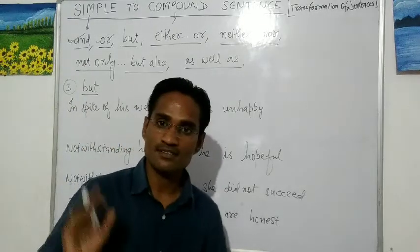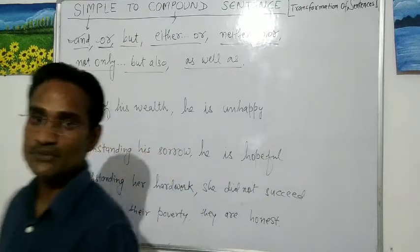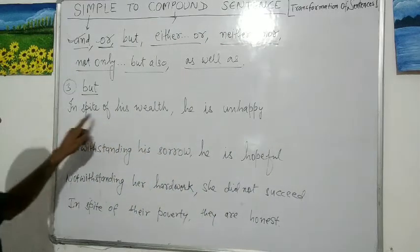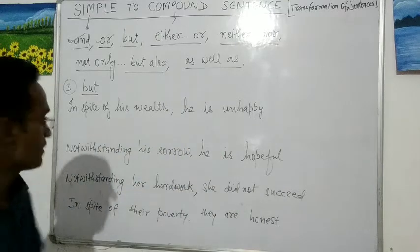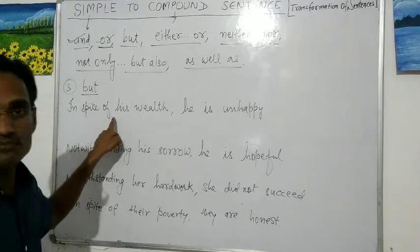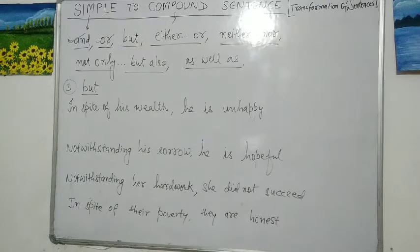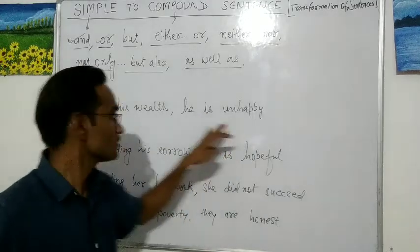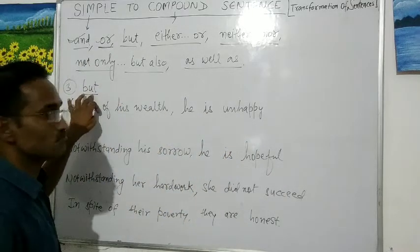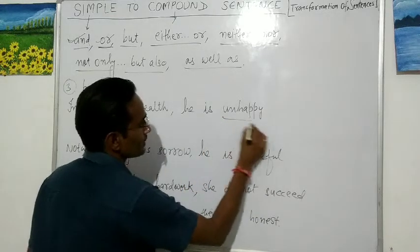Now let's move to the next conjunction, which is 'but' — the third one. How do we use 'but'? Example: 'In spite of his wealth, he is unhappy.' 'In spite of' means despite — even though he has good wealth and property, he is unhappy.